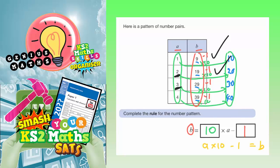Start with 3, 10 times 3 is 30, take away 1 is 29. So that works. Start with 4, 10 times 4 is 40, take away 1 is 39. So that also works. So our rule is B is equal to 10 lots of whatever it is, subtract 1.